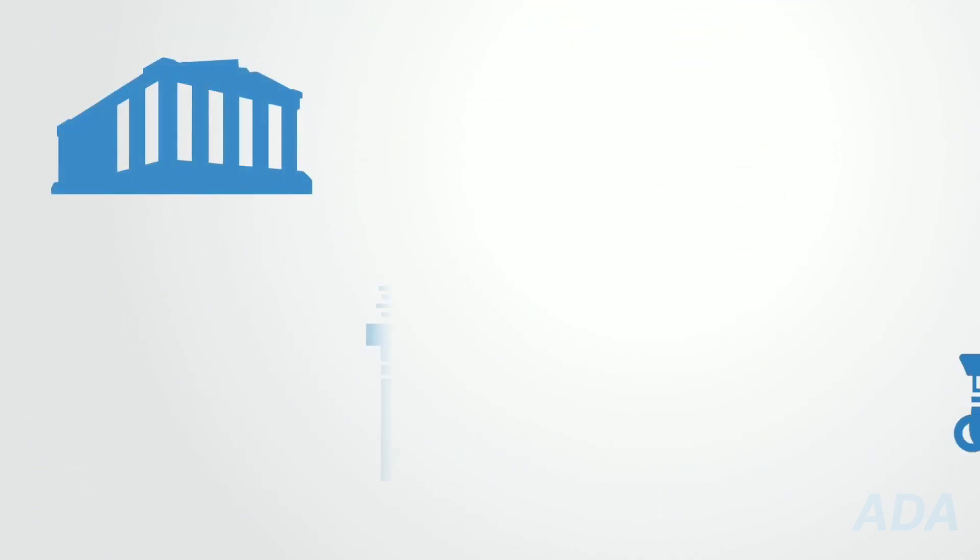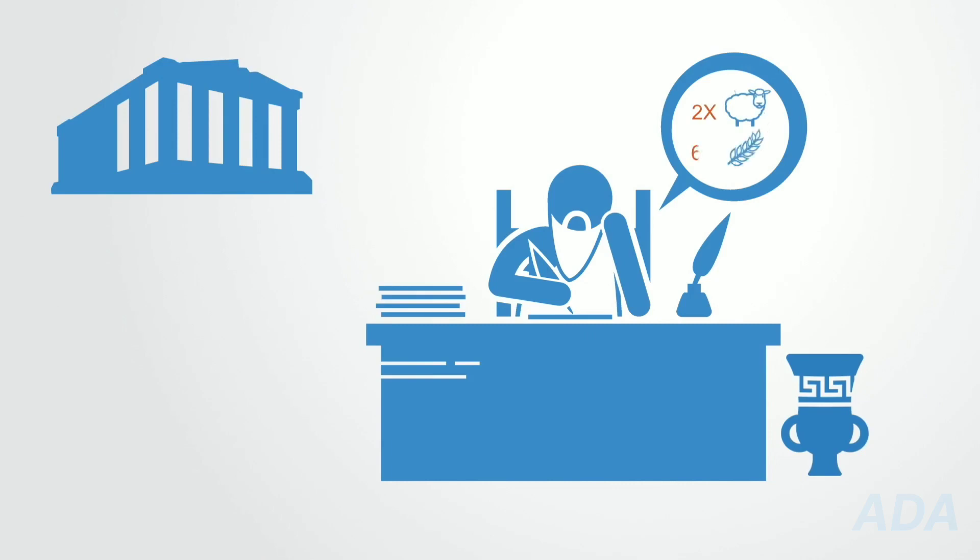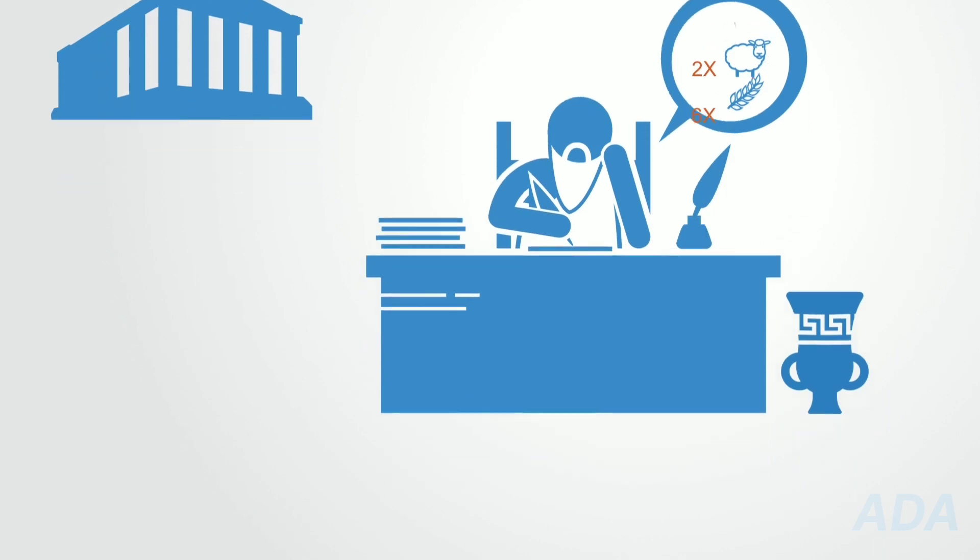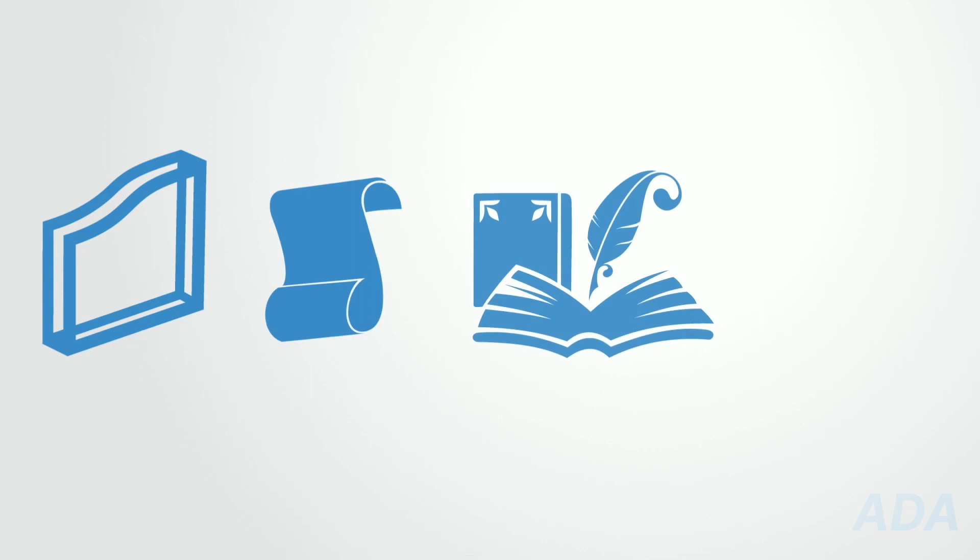Since ancient times, ledgers have formed the backbone to our economies. To record contracts and payments for the buying and selling of goods or the exchange of assets like property, these ledgers started out as records in stone, clay tablets and papyrus, and later paper as they evolved into the ledger books supporting modern accounting.